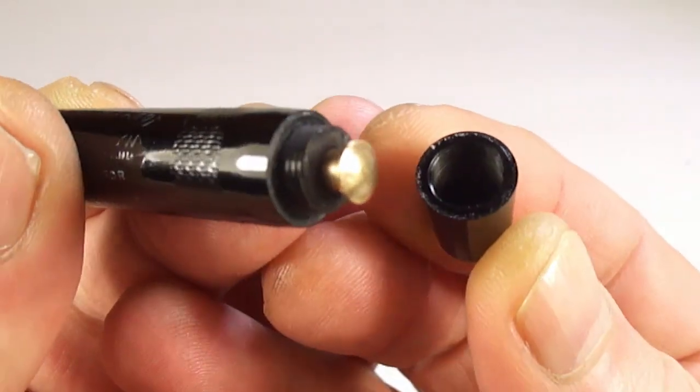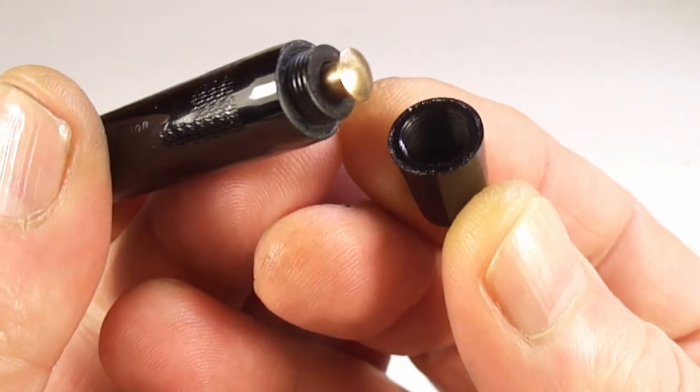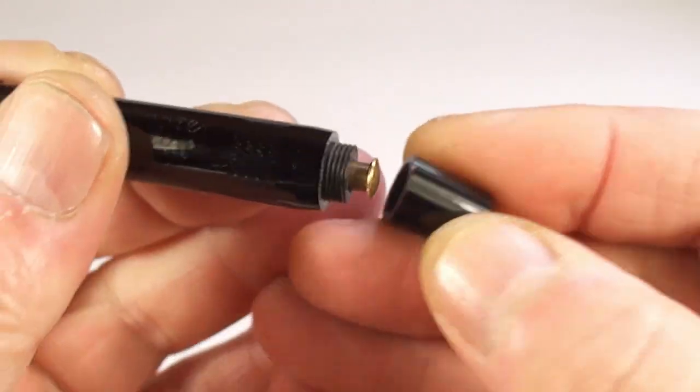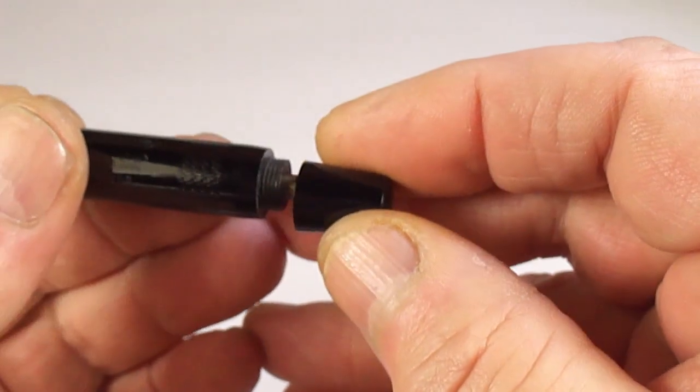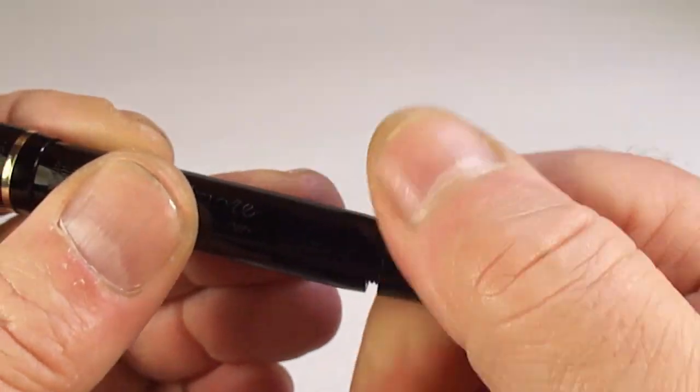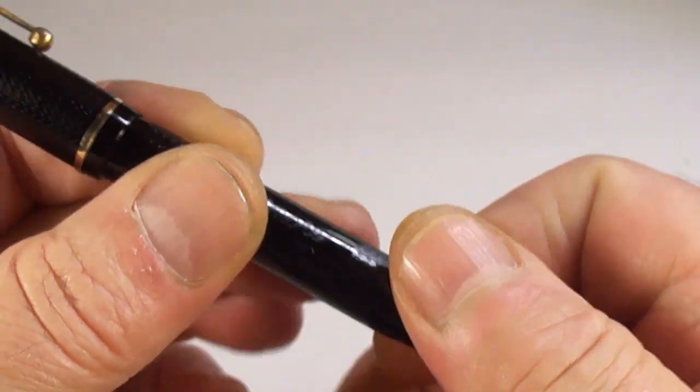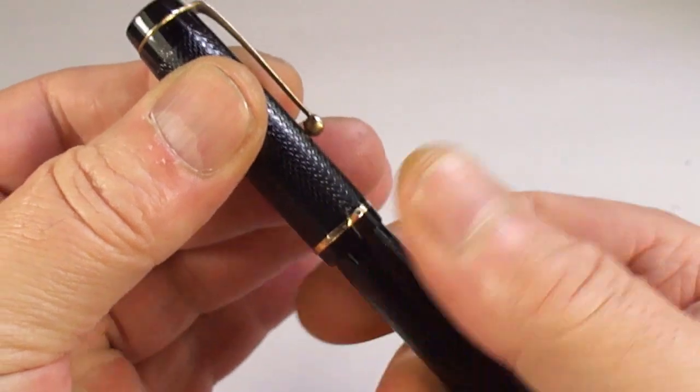If we remove the blind cap, there you go. You can see we've got the button to the bottom there. So what we'll do, let's just pop that back on. Okay, let's take off the cap for you.